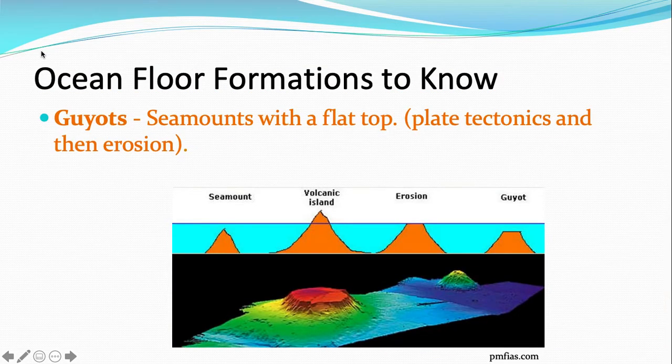A guyot is a seamount with a flat top, and that's formed by plate tectonics. You have to have a seamount first, and then it gets eroded so that the top is flat, and the sea level is now above the guyot. It has to be an underwater flat-topped seamount. It's called a guyot.